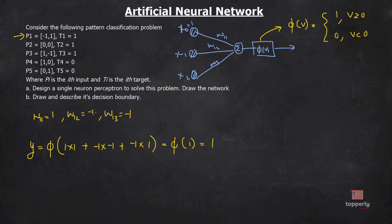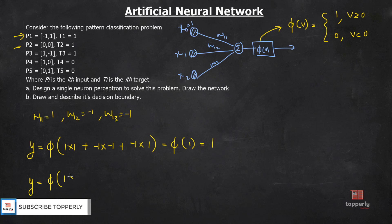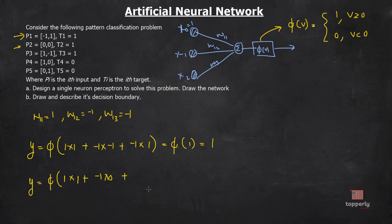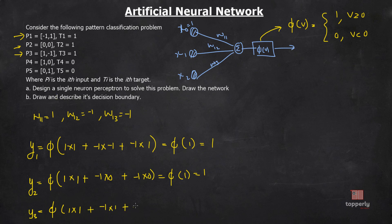These weights satisfy for the first input pattern. For P2: y equals phi(1 times 1 plus minus 1 times 0 plus minus 1 times 0) equals phi(1), which is 1 — the desired output. For P3: phi(1 times 1 plus minus 1 times 1 plus minus 1 times minus 1) equals phi(1), which is 1 — also the desired value. Weights are satisfied for input patterns 1, 2, and 3.